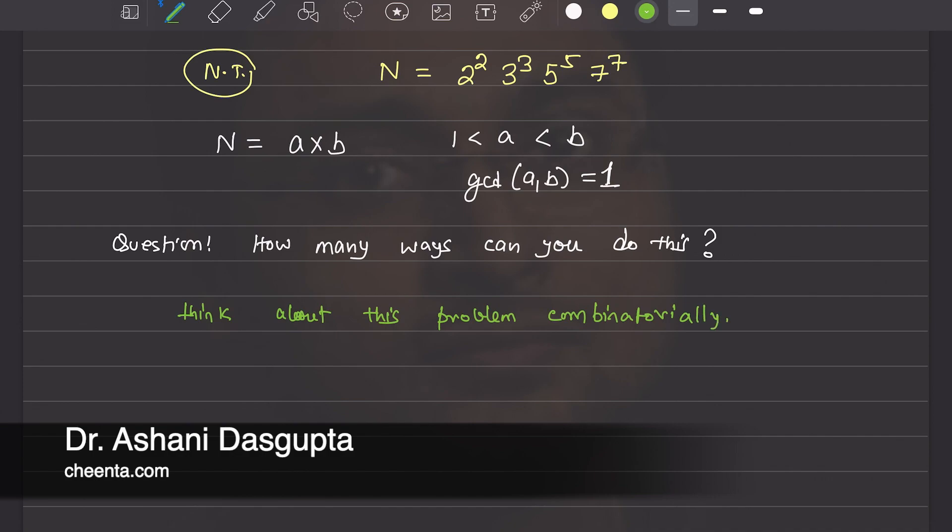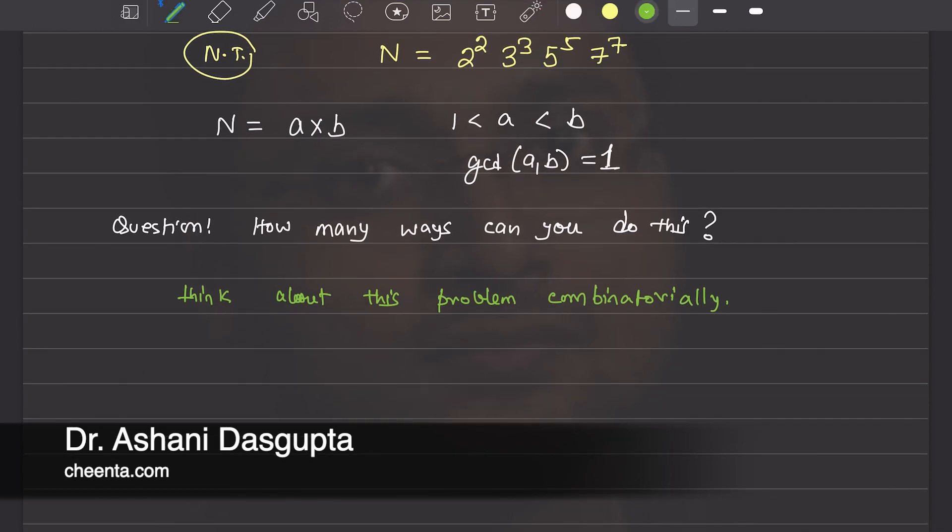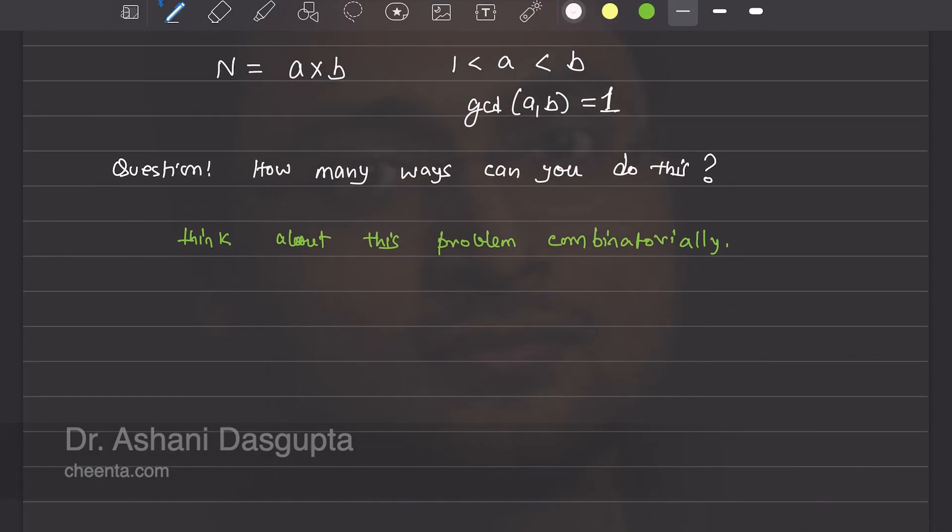What does that mean? Well, my claim is, if I want to write n as a product of two numbers whose GCD is 1, all I am doing is creating subsets out of these four prime factors. There are four primes involved: two, three, five, and seven.